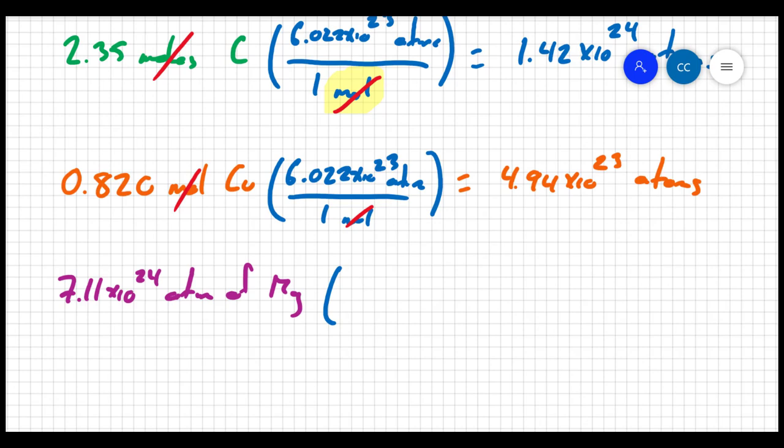So I'm going to flip this and put 1 mole over 6.022 times 10 to the 23 atoms. And that way I can cancel out my atoms, and I'll be left in moles, which is what I want. And when I do that, I end up getting 11.8 moles of magnesium.